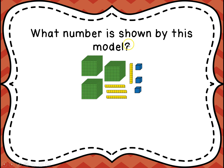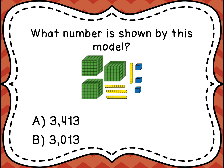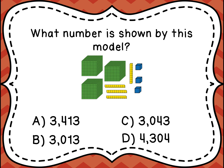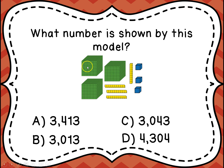Here's another one for you. What number is shown by this model? Is it A, three thousand four hundred thirteen; B, three thousand thirteen; C, three thousand forty-three; or D, four thousand three hundred four? If you said the answer was three thousand forty-three, you would be correct, because there were three in the thousands place, four in the tens place, no hundreds, and three in the ones — three thousand forty-three.